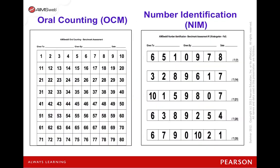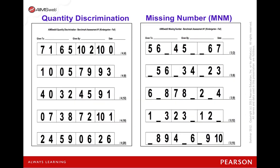The tests of early numeracy include: oral counting measures — how high can a student count aloud in one minute starting at one; number identification measures — students name numbers written out of sequence; quantity discrimination measures — students compare two numbers to determine which is bigger; and missing number measures — students determine the missing number in a sequence of three.